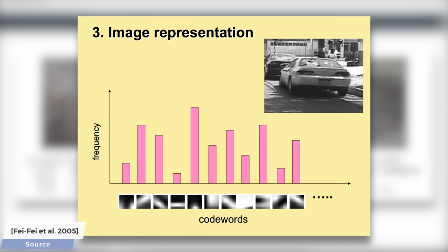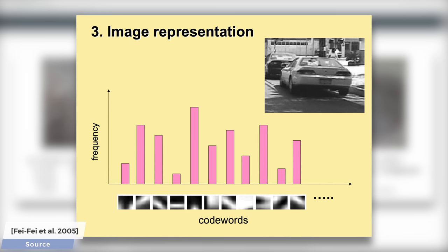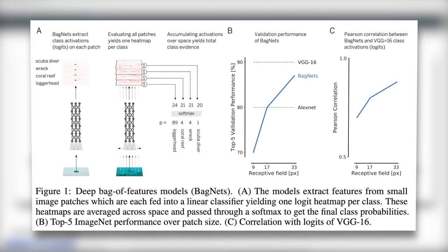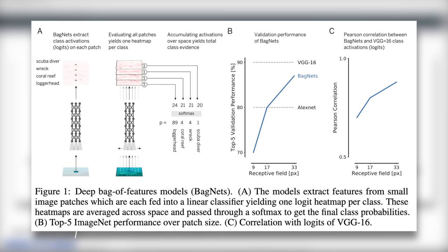A disadvantage, one would say, is that because it works per snippet, it ignores the bigger spatial relationships in an image, and therefore, overall, it must be vastly inferior to a neural network. Right? Well, let's set up an experiment and see.